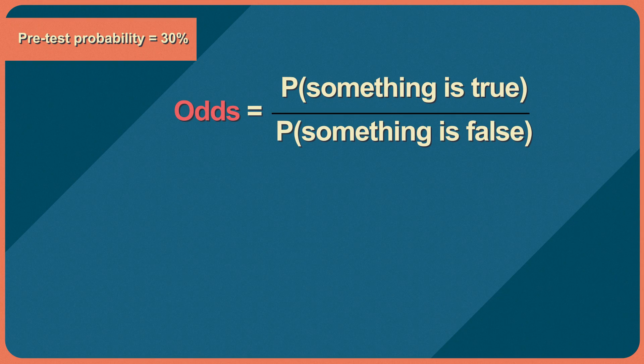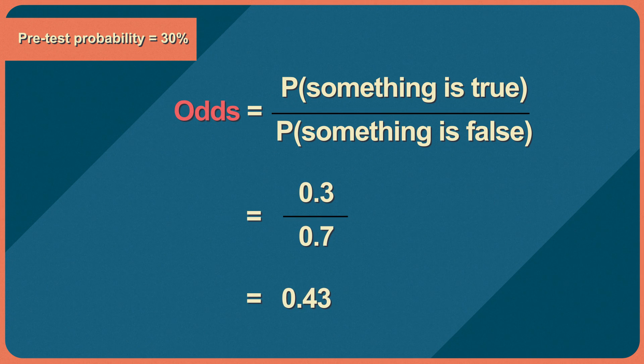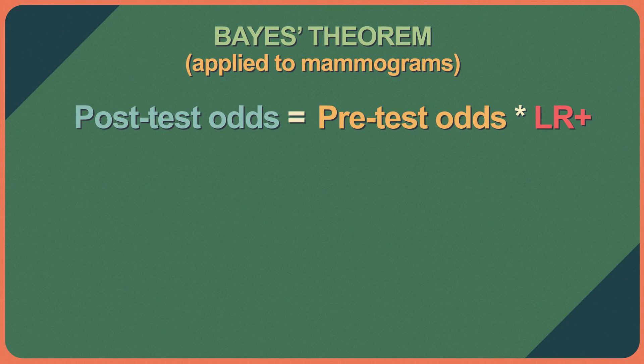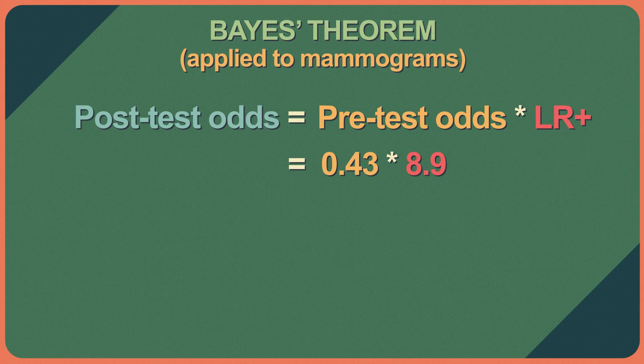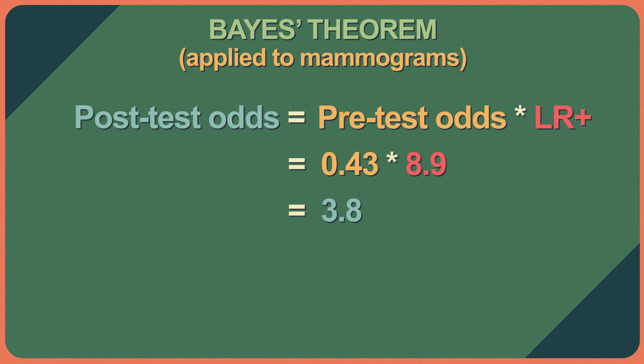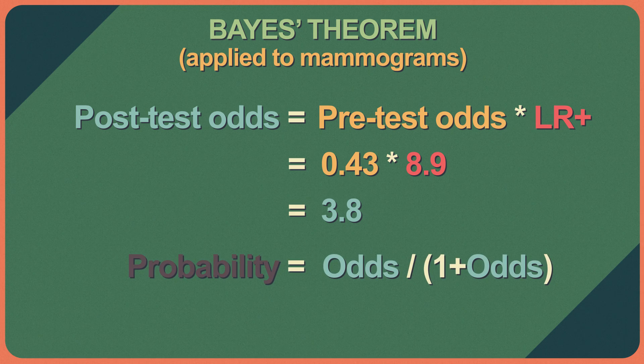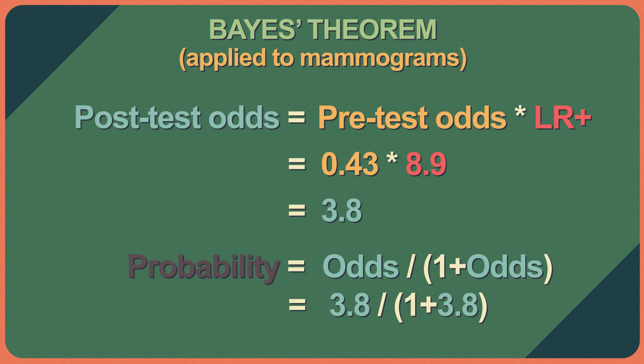This change is based on clinical suspicion. If you had a lump or a really concerning history such that your doctor thought you had a pre-test probability of 30% instead of the background half of 1%, then your equations change. Your pre-test odds would be 0.3 over 0.7, or 0.43. A positive mammogram would mean post-test odds of 0.43 times 8.9, or 3.8. Converting back to probability — 3.8 over 1 plus 3.8 — gives a final probability of 79%. This woman with a positive mammogram would have almost an 80% chance of having breast cancer.